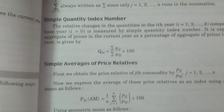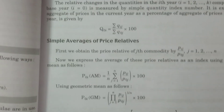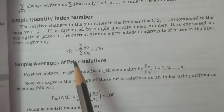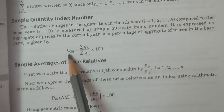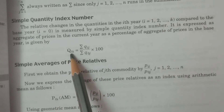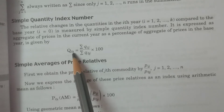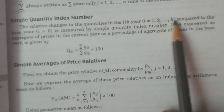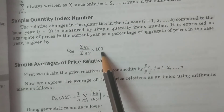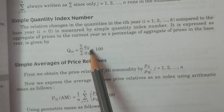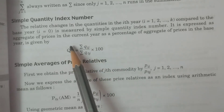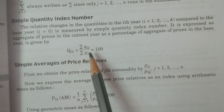Similarly, the simple quantity index number Q0I — Q represents quantity, 0 is base year, I is current year — is equal to summation QIJ by summation Q0J into 100. Small q represents the quantity of a particular commodity. I may take values 1 to K.